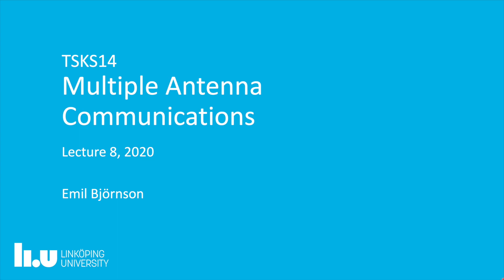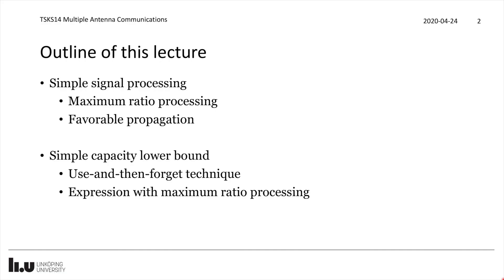Welcome to lecture number 8 in Multiple Antenna Communications at Linship University. In this lecture, we will take a look at the uplink again, but now with a simpler type of signal processing, namely maximum ratio processing, which is rather similar to the maximum ratio combining discussed earlier in this course, but now applied to an uplink multi-user MIMO or massive MIMO system. We'll use favorable propagation properties to motivate this processing and compute a simpler capacity lower bound based on the use and then forget technique, with a closed form expression.